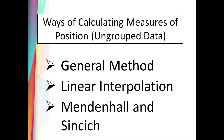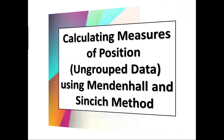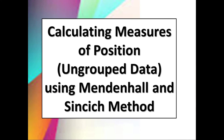Welcome back to my channel. The three ways of calculating measures of position for ungrouped data are: the general method, linear interpolation, and Mendenhall and Sinscih method. In this video, we will study calculating measures of position for ungrouped data using the Mendenhall and Sinscih method.